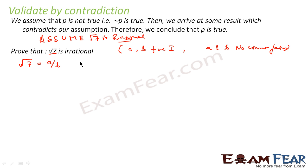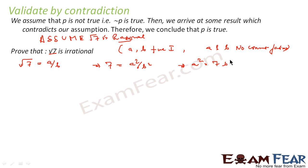We square both sides: √7 squared becomes 7, and (a/b) squared becomes a²/b². So we can say that a² is equal to 7b². Thus we can say that a² is nothing but 7 times some constant k, since b² is a constant.